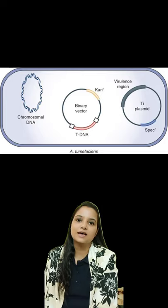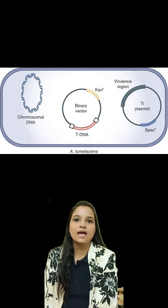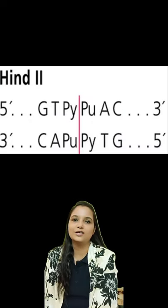The vector for T-DNA is Agrobacterium tumefaciens, and the first isolated restriction endonuclease is HindII.